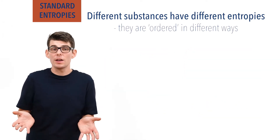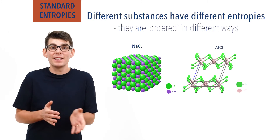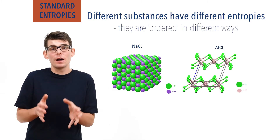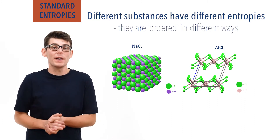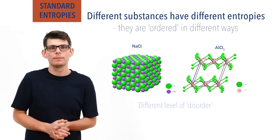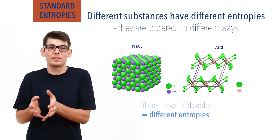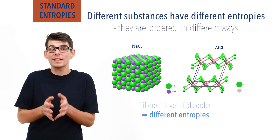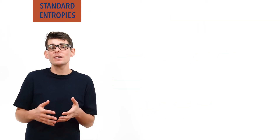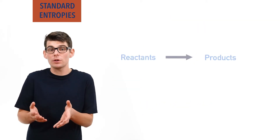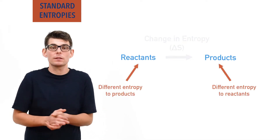The arrangement of ions in solid sodium chloride will be different to the arrangement of ions in aluminium chloride at the same temperature, as the ions are different sizes and are unable to pack or arrange themselves in the same way, giving a different amount of disorder. The difference in entropy here will be very low as both structures are very similar and ordered in a very similar way, but technically they would have different entropies. This means whenever a set of reactants reacts to form products, a change in entropy will occur, as the products will have a different entropy to the reactants.